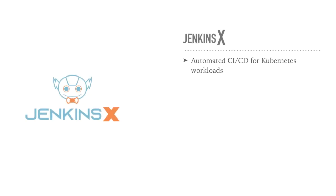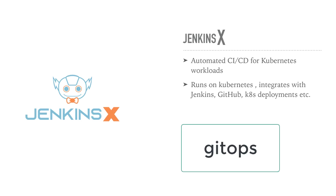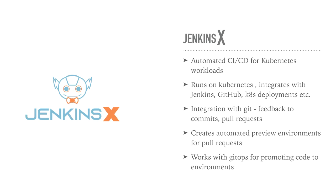JenkinsX offers continuous automated CI/CD for cloud-native applications running on top of Kubernetes. It integrates Jenkins, GitHub, and Kubernetes deployments through GitOps, and lets you create a complete repository including the Jenkinsfile. It connects with your Git repository, sets up triggers and hooks, and sends feedback to pull requests. For every pull request, it can create automated disposable preview environments to verify whether the code works, and then promote code to different environments using GitOps.